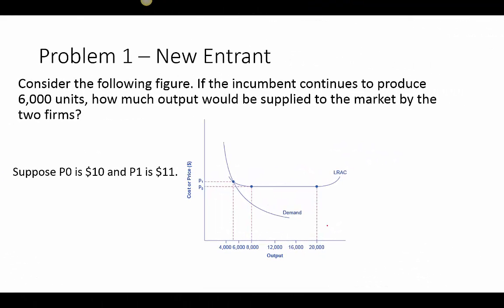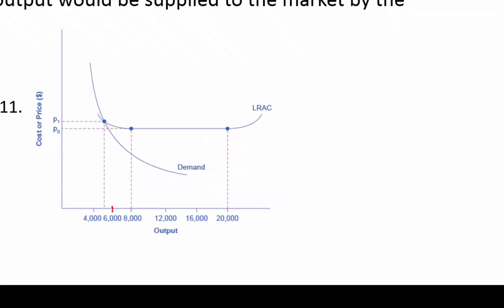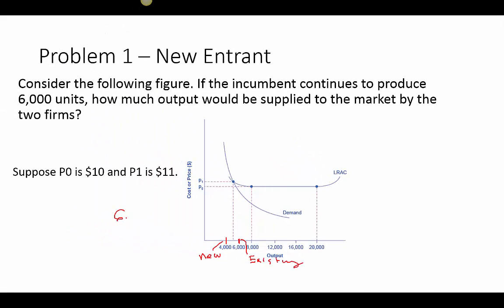Moving to the next part: if the incumbent continues to produce 6,000 units, how much output would be supplied to the market by both firms? The incumbent produces 6,000 units and the new entrant produces 4,000 units, so the total market supply would be 10,000 units.